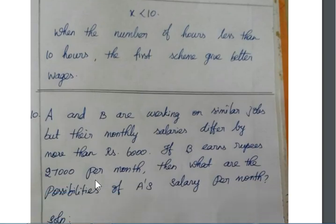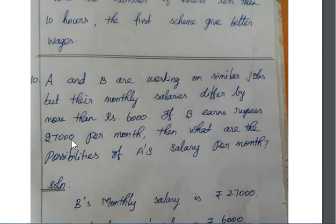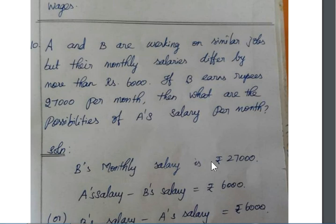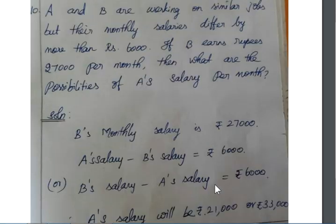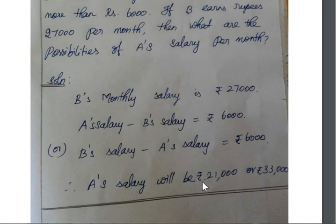Question number 10: A and B are working on similar jobs, but their monthly salaries differ by more than 6000 rupees. If B earns 27,000 rupees per month, then what are the possibilities of A's salary per month? B's salary is given, and their difference is also given. Therefore, A's salary will be either 27,000 plus 6,000, which equals 33,000, or 27,000 minus 6,000, which equals 21,000.